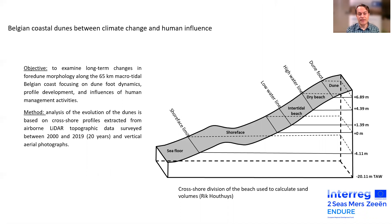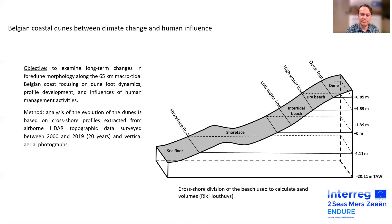The objective of our study was to examine the long-term changes in foredune morphology along the 65 kilometers of macro-tidal Belgian coast, with a focus on dune foot dynamics. Normally we use a diagram showing the conventional division of different parts of the active beach at the Belgian coast, used to calculate volumes for dry beach, tidal beach, shoreface, and dunes. At the moment, everything above 6.89 meters TAV is considered dune, and everything below is considered part of the active beach. We think this convention is not so realistic.